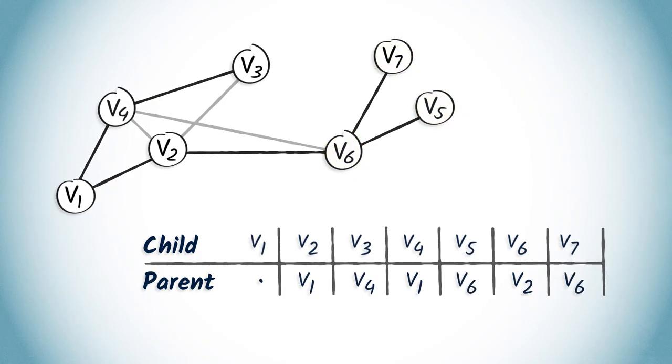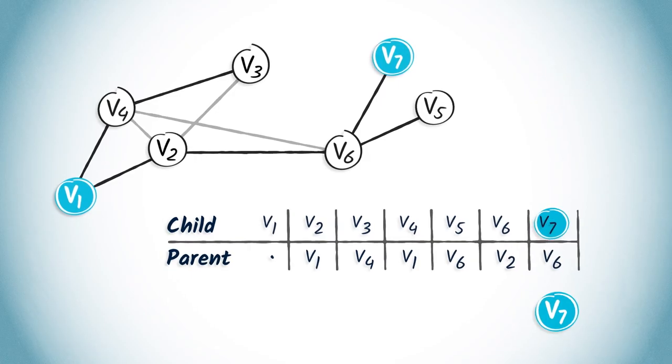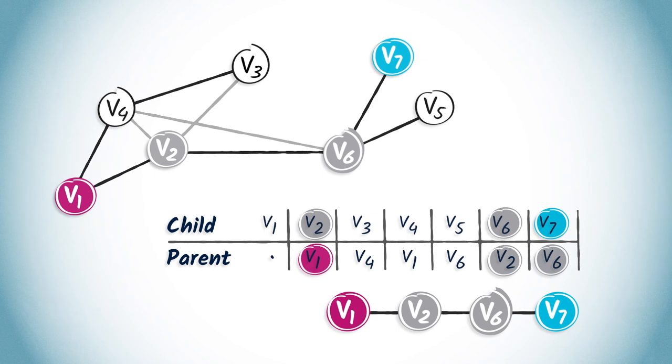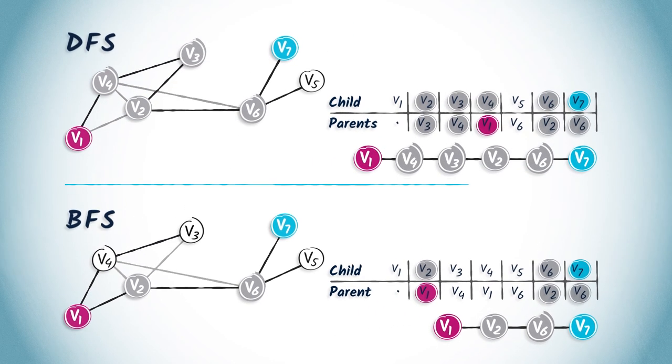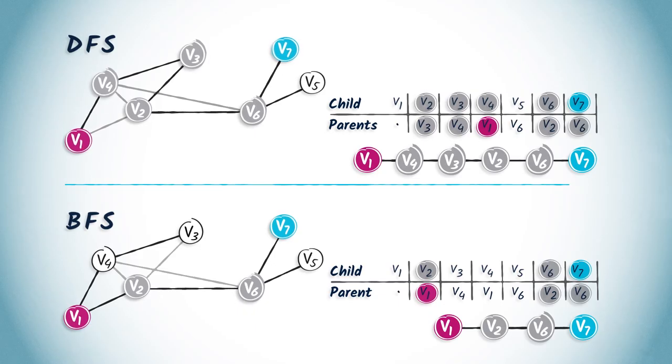If we read the path from V1 to V7 in the table, we obtain V7, V6, V2, V1. We can see that this path is shorter than the one obtained using a DFS, which was V7, V6, V2, V3, V4, V1. This is an important difference between a DFS and a BFS. A BFS is a more cautious approach than DFS, as a BFS gradually increases the distance from the starting position.